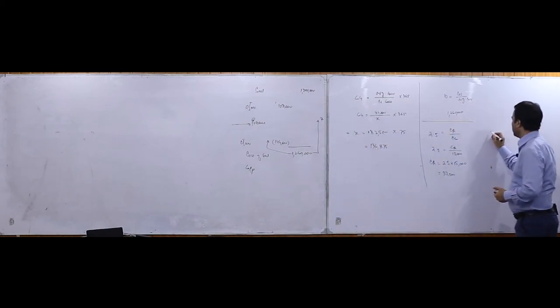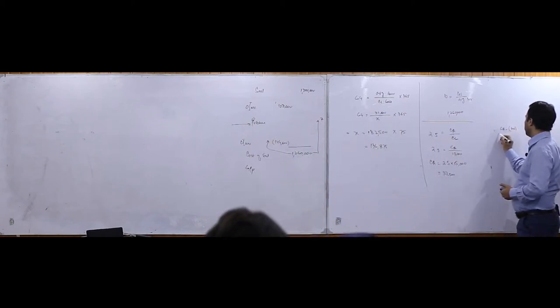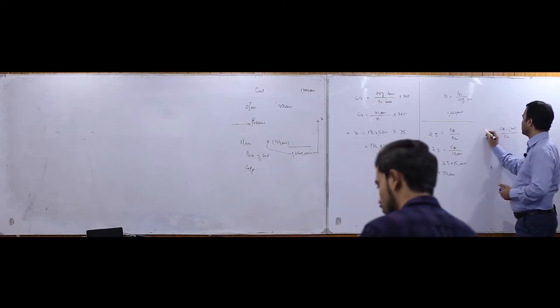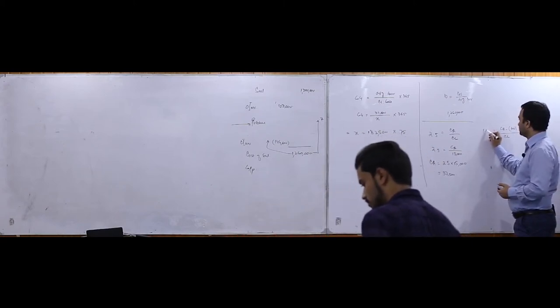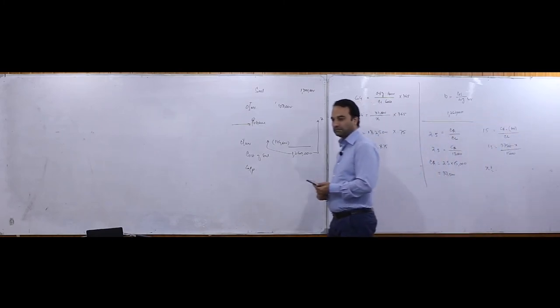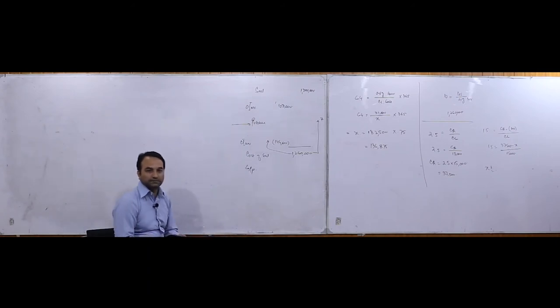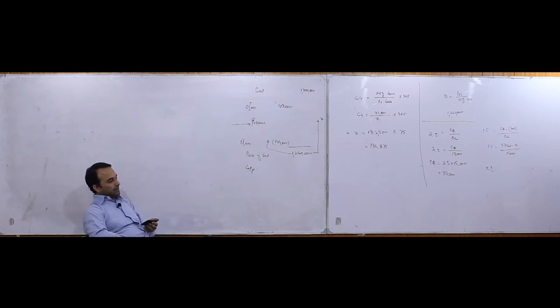Quick ratio. Quick ratio is the current asset minus inventory divided by current liabilities. And this ratio is 1.5. Put up the values. 1.5 is equal to 37,500 minus x divided by 15,000. So solve the x now. 15,000. How much is it? 15,000 inventory.